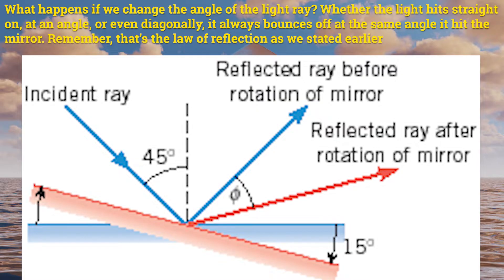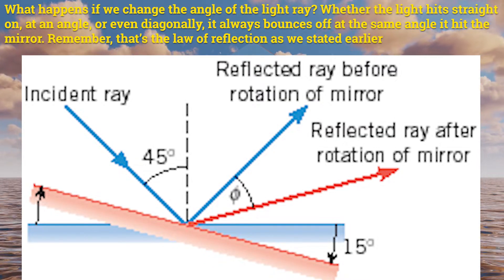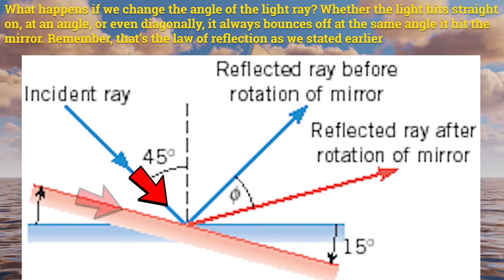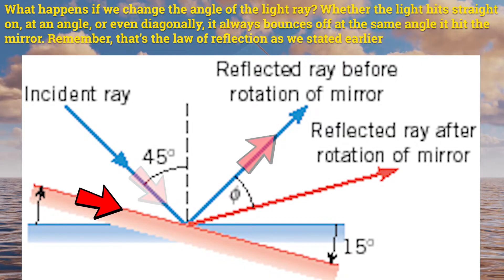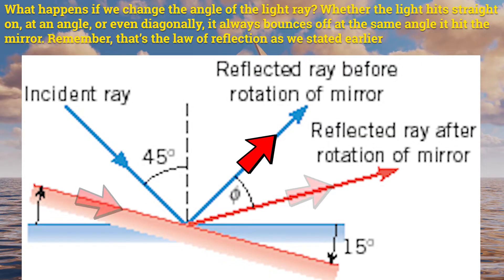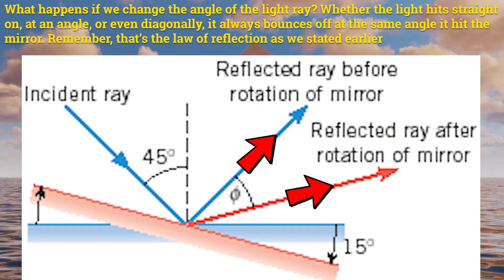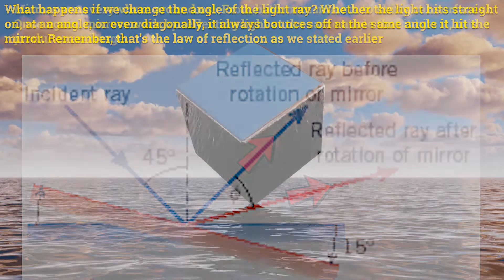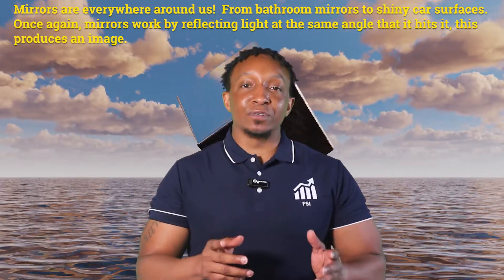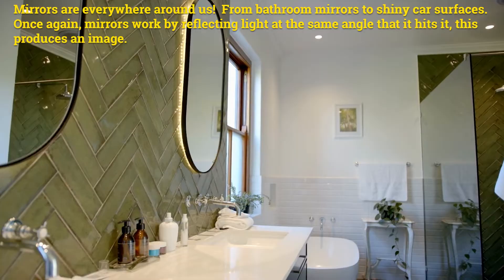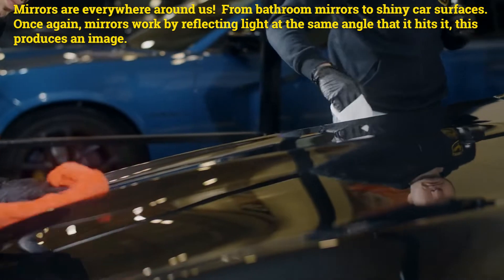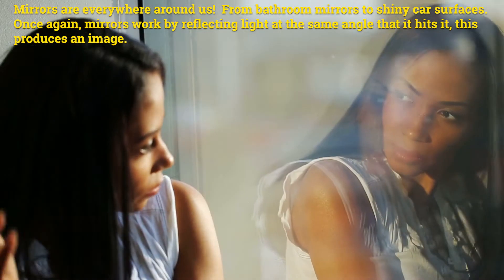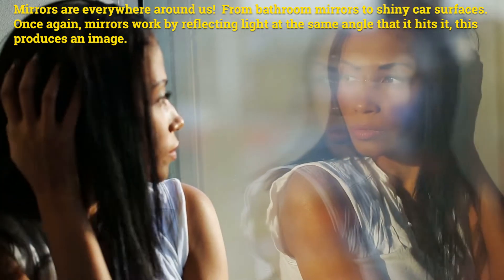What happens if we change the angle of the light ray? Whether the light hits straight on, at an angle, or even diagonally, it always bounces off at the same angle it hit the mirror. Remember, that's the law of reflection as we stated earlier. Mirrors are everywhere around us, from bathroom mirrors to shiny car surfaces. Once again, mirrors work by reflecting light at the same angle that it hits them.